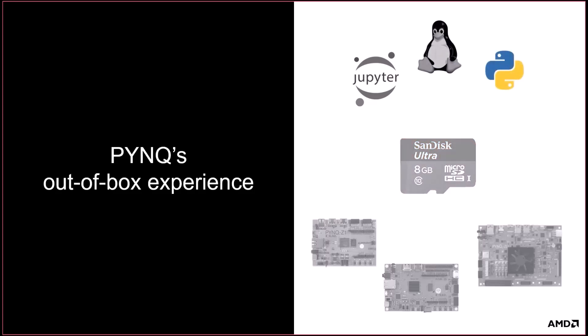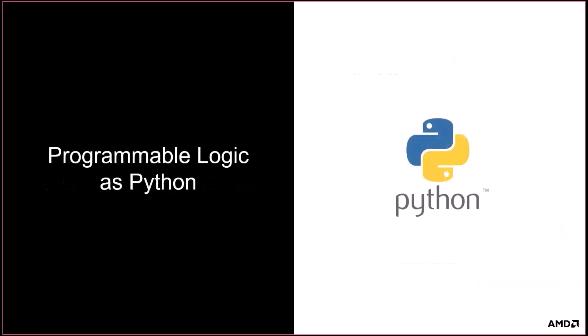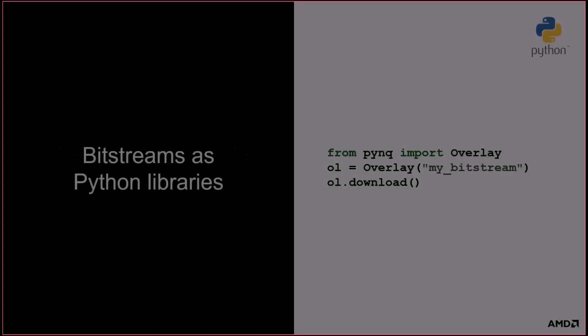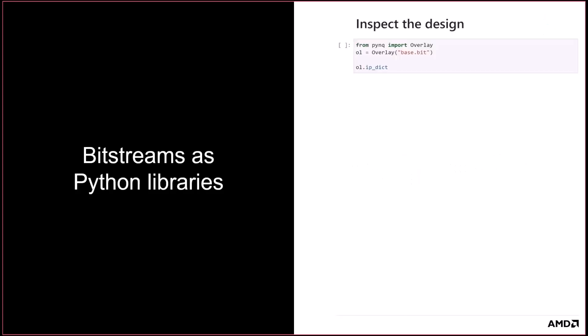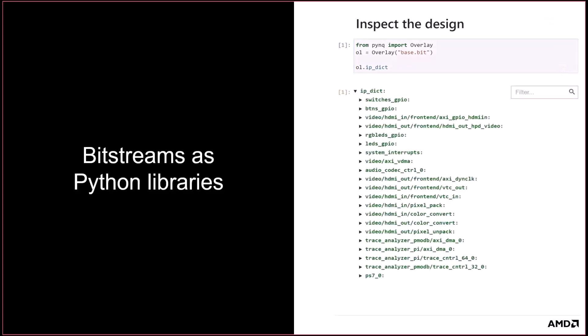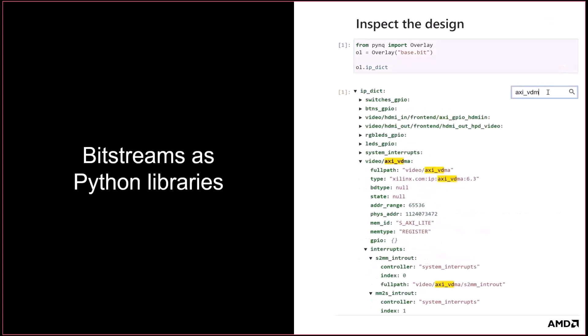Now let's look at how PINK leverages and extends Python — in particular, how Xilinx technologies from both the software and hardware perspective map into Python using PINK as a bridge. With PINK, we've built a library of APIs common across Xilinx platforms. The PINK overlay class is used to manage the programmable logic and can download bitstreams to configure the PL. In this example, we import the PINK overlay class, declare the object, and use it. Most things in Python can be simplified to this level: import, declare, and use. Despite the simplicity of the code, there's a large stack of functionality happening beneath the API.